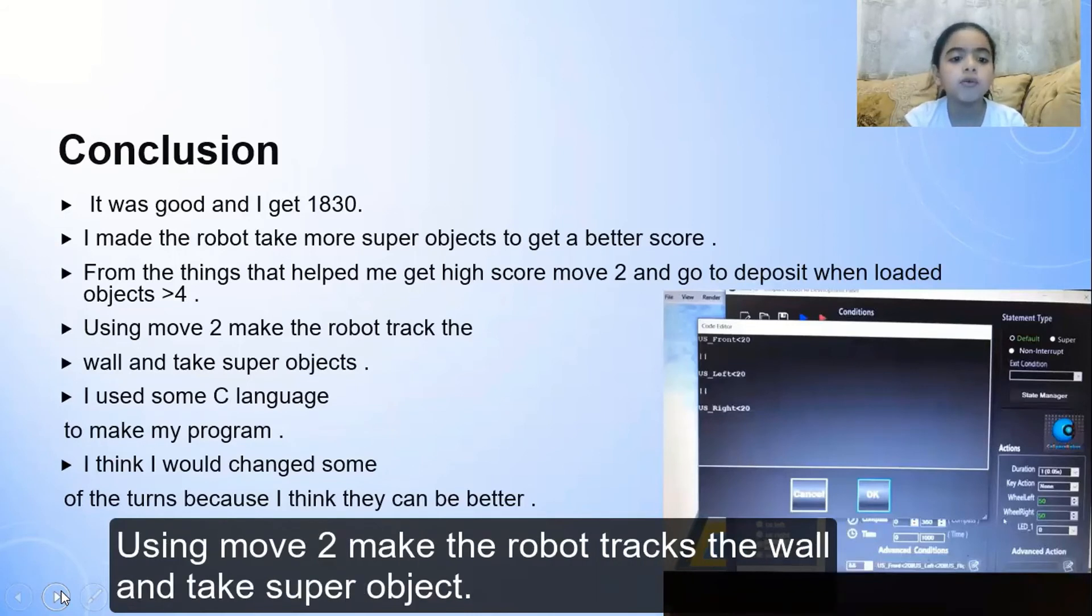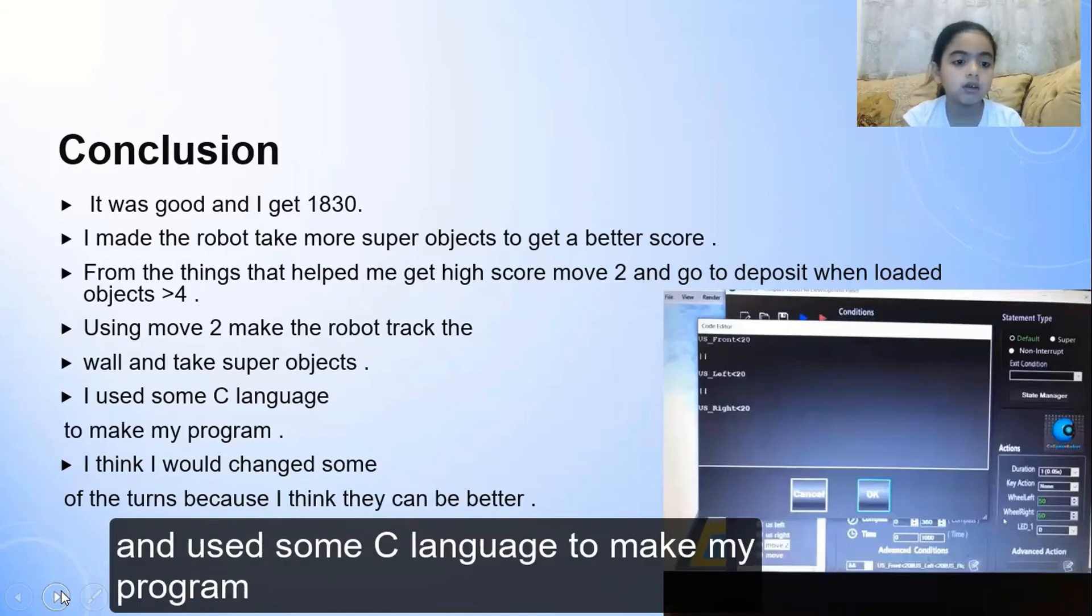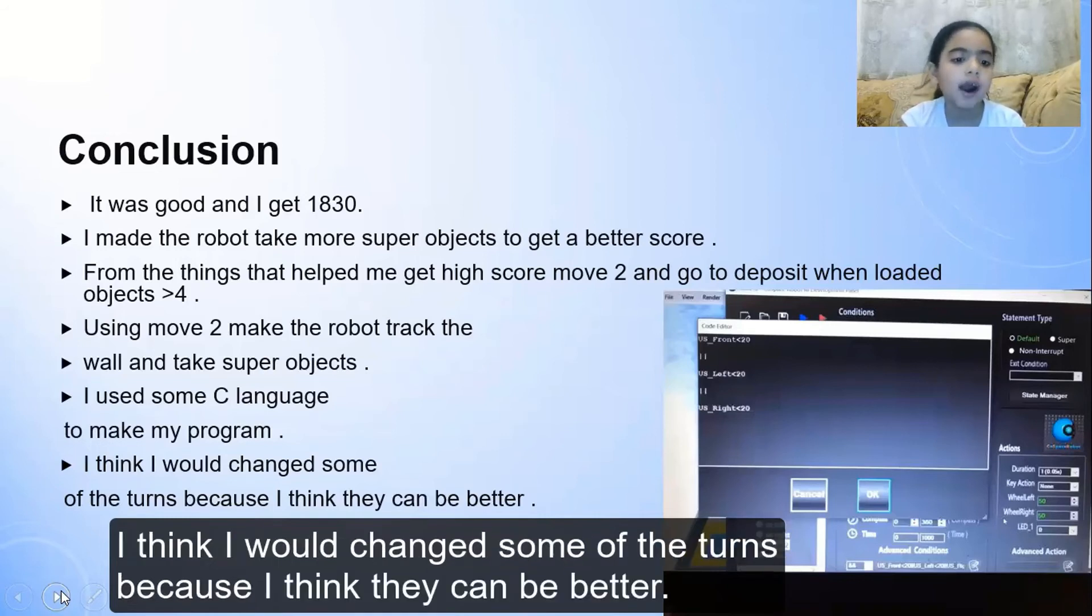Using move 2 made the robot drag the wall and take super objects and use some C language to make my program. I think I would change some of the turns because I think they can be better.